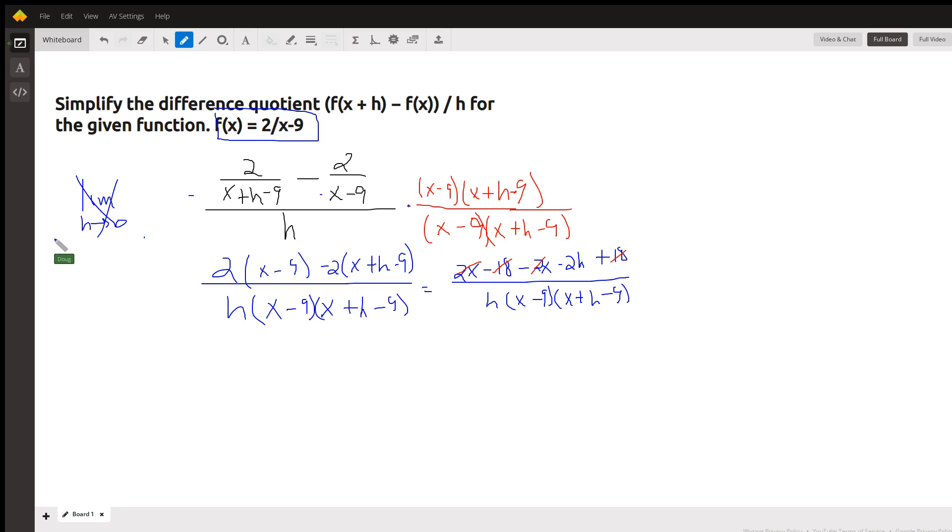Because when you do that you get a simple fraction. When we take this LCD times the first term in the numerator, the x plus h minus nine cancels out and we have two times the remaining factor which is x minus nine. And when we take that LCD times the second term in the numerator...